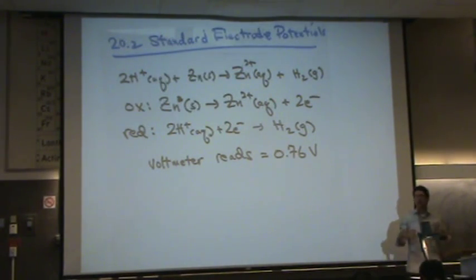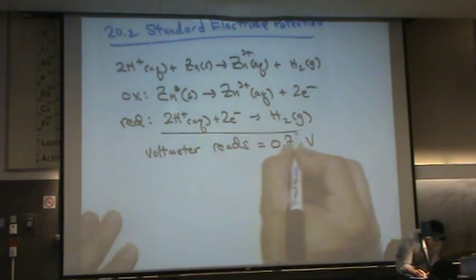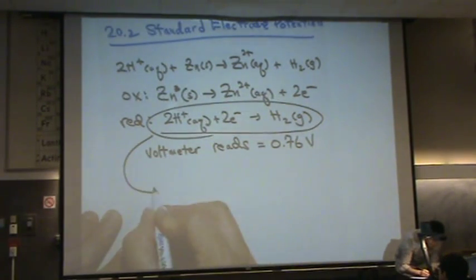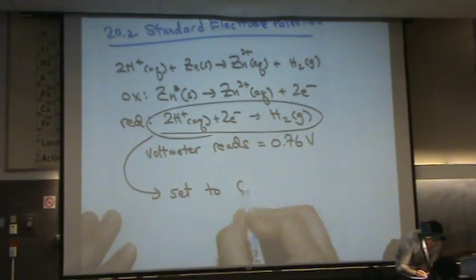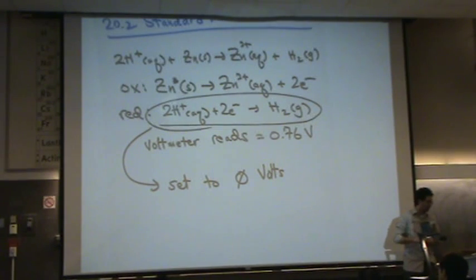So what we're going to do arbitrarily, with nothing else behind it besides having to pick something, we need to set a particular half reaction to zero. So what we're going to do is take this one right here, set to zero volts. Set to zero volts arbitrarily. 0.000 whatever amount of sig figs you need.